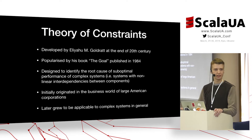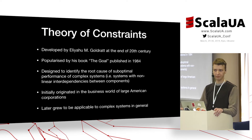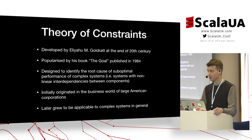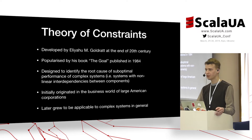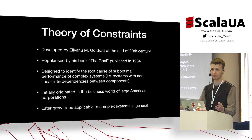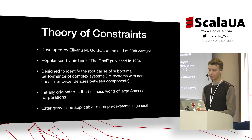Eliyahu Goldratt is a physicist by education, and the purpose of the theory was how to manage complexity during production processes on large plants.